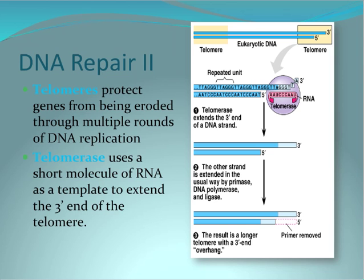Telomeres are added to the ends of DNA to prevent genes from being eroded through multiple rounds of DNA replication. The enzyme telomerase uses a short molecule of RNA as a template to extend the 3' end of the telomere.